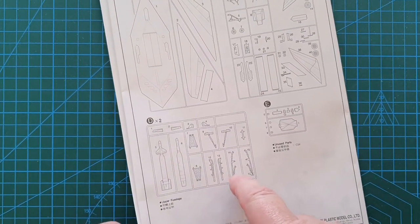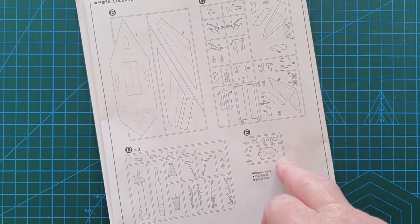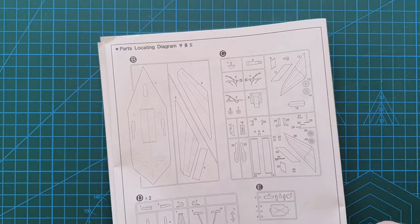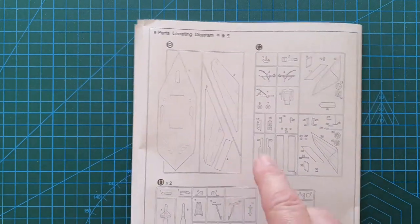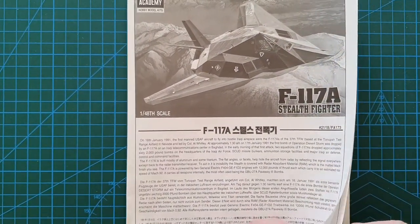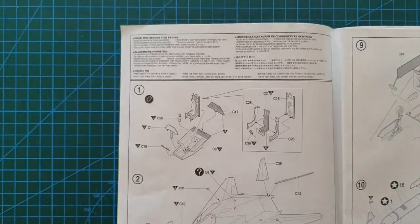You'll see the sprue layout. Fairly basic, you do get two of these which are just the GBUs and the bomb rack. Cockpit canopy, of course, and fittings, wheel bay doors. So fairly straightforward build I think for this one.